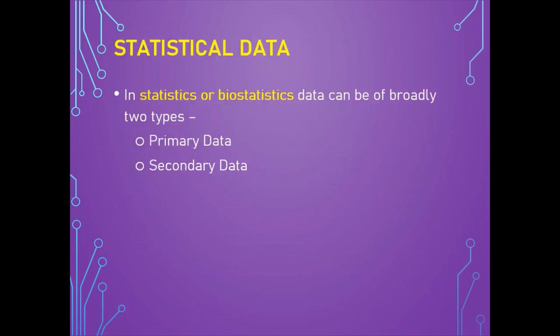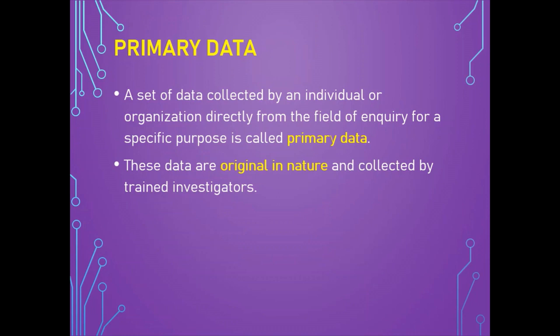Broadly speaking, in statistics or biostatistics, data can be majorly divided into two types: primary data and secondary data. Primary data is represented by a set of data collected by an individual or organization directly from the field of inquiry for a specific purpose. These data are original in nature and collected by trained investigators. The collection of primary data is not simple — it is a tedious, time-consuming, and costly process.